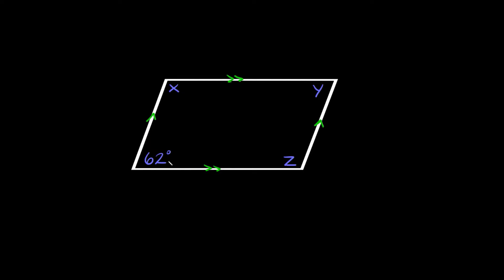So 62 and x should add up to 180 degrees since they're consecutive angles. If this one is 62 degrees, that means x must be 118 degrees. Same thing down here: 62 and z are consecutive, so those must add up to 180, meaning z is also 118 degrees. x and z are the same because they are opposite angles, and opposite angles are always congruent. So 62 and y are also opposite angles, meaning y should also be 62 degrees.